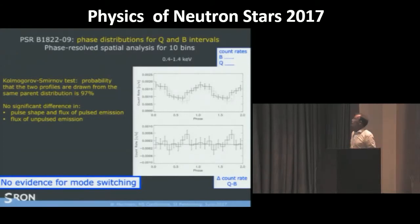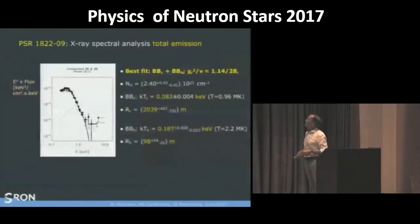Then the spectra. The total emission we can very nicely explain with two blackbodies. And other fits with power laws do not give a proper description. We have two blackbodies: a cool one with 0.08 keV or 0.96 million Kelvin with a large radius if you take a blackbody fit. And a hot one with a 100 meter radius at 2.2 million Kelvin.